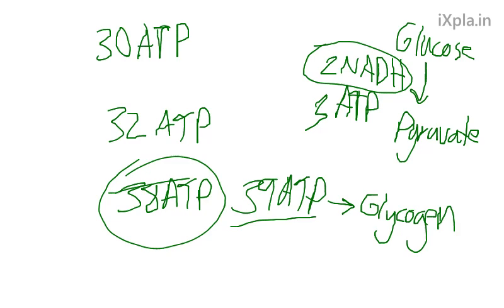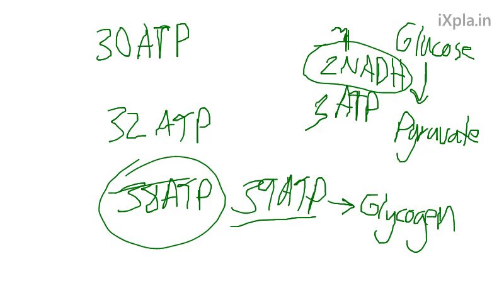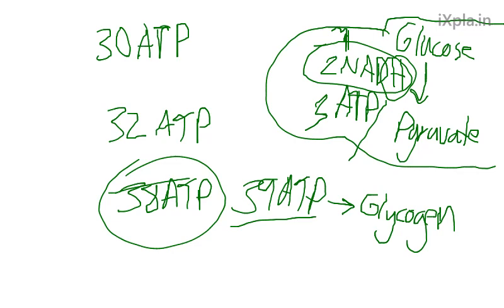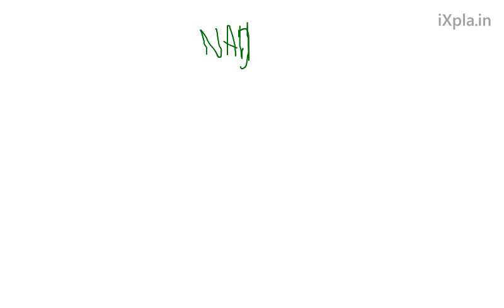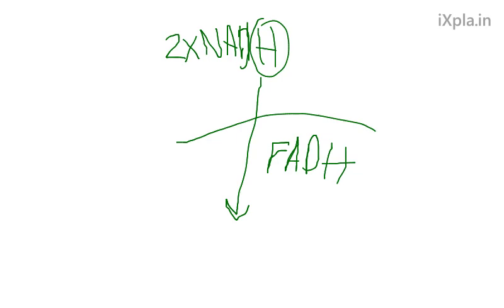You might also see 36 ATP cited — that's due to the shuttle systems. NADH produced in the cell cytosol during glycolysis can't get directly into the mitochondria where the electron transport chain is. Shuttle systems bring those electrons in. One shuttle system transfers the hydrogen to an FAD, making FADH — which only gives two ATP instead of three, so you lose one ATP per NADH shuttled that way. Another shuttle system transfers it to NAD, making NADH, preserving the full three ATP. That's why different sources give different total ATP counts.